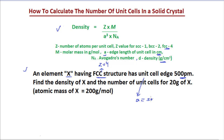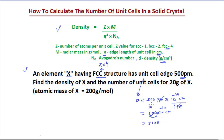We have 500 picometers. We know that one picometer is equal to 10 to the power of minus 10 centimeters. Picometer units cancel out, giving us 500 multiplied by 10 to the power minus 10 centimeters. Moving the decimal two digits to the left, we get 5.00 × 10⁻⁸ centimeters. This is the length of the unit cell in centimeters.